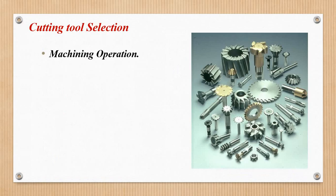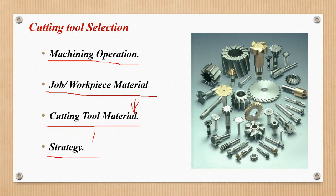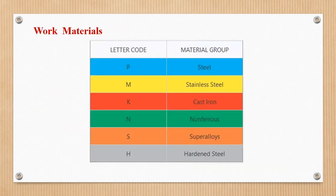Cutting tool selection — this is the main category. If you have a machining operation, this is the cutting tool. Next is the job and work piece — this is the type of metal. If you don't know how to use a cutting tool, you can select the cutting tool and then select the strategy.